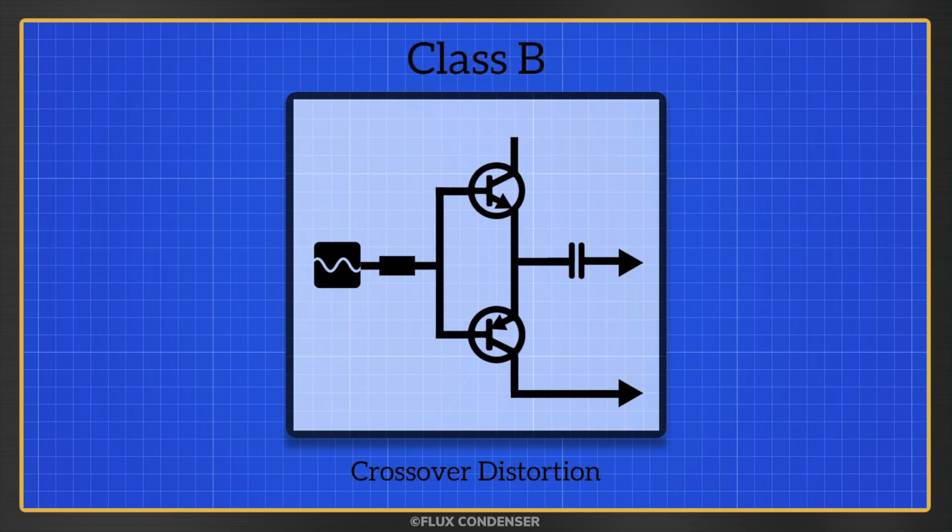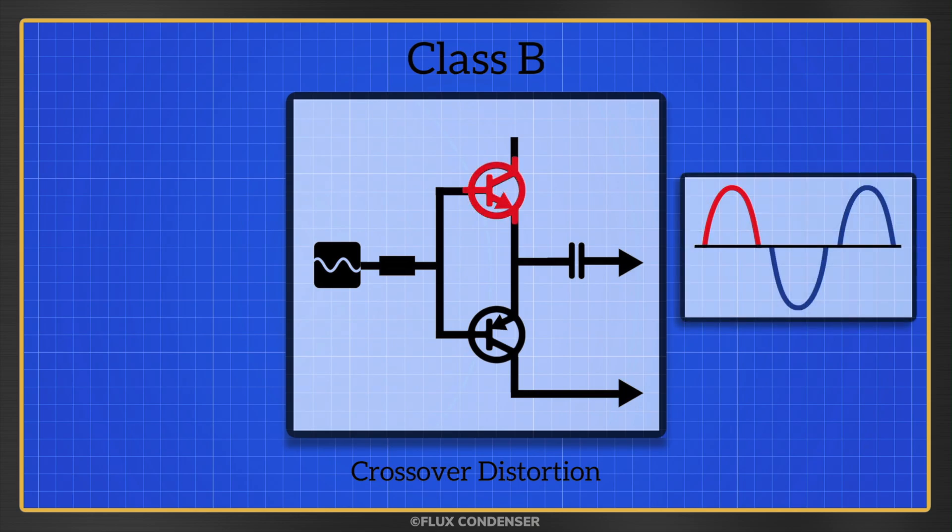As we noted, class B amps are efficient but can suffer from crossover distortion. And that's when there's a gap in the signal when switching between the NPN and PNP transistors. What causes the gap? Well, transistors can only turn on when they reach about 0.6 volts of current, so any signal below that voltage won't get amplified. And when the transistors are off, the signal isn't getting reproduced. This of course creates distortion.